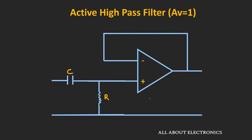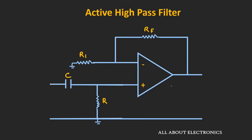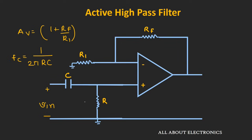Like we have designed the active low-pass filter, similarly we can design the active high-pass filter. Here is the circuit of an active high-pass filter with unity gain, where the op-amp is used as a buffer to isolate the load and the filter circuitry. If we want to amplify the filter output, then we can configure this high-pass filter in a non-inverting amplifier configuration, very similar to what we had seen for the active low-pass filter. The gain of this filter will be 1 plus Rf divided by R1, and the cut-off frequency fc is given by 1 divided by 2π times RC.